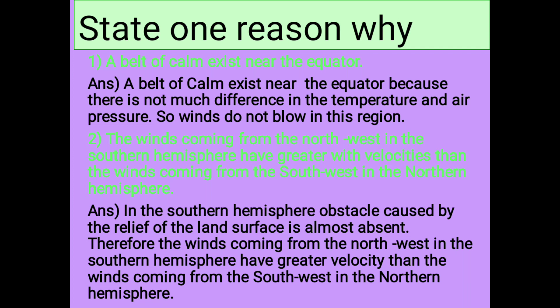The winds coming from the northwest in the southern hemisphere have greater velocities than the winds coming from the southwest in the northern hemisphere. Answer: In the southern hemisphere, the obstacle caused by the relief of the land surface is almost absent. Therefore, the winds coming from the northwest in the southern hemisphere have greater velocity than the winds coming from the southwest in the northern hemisphere.